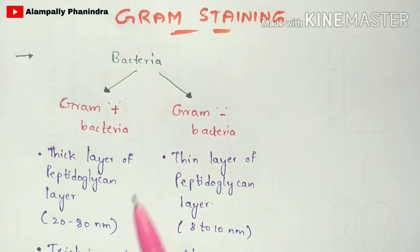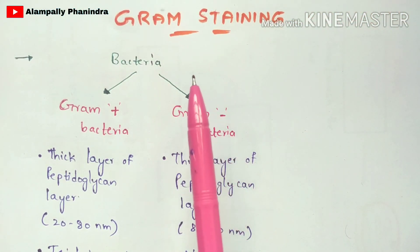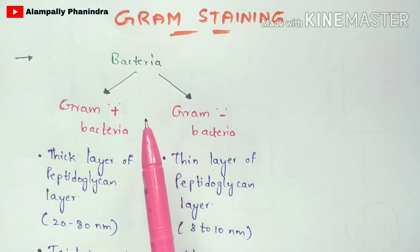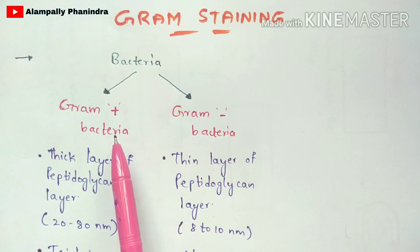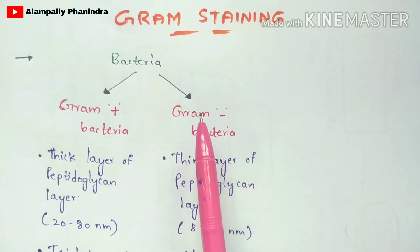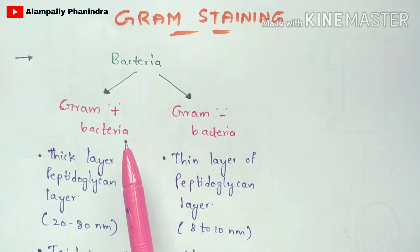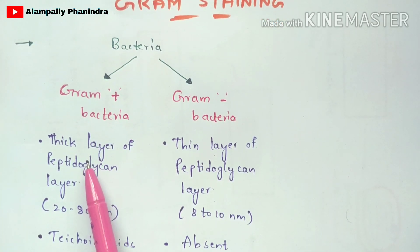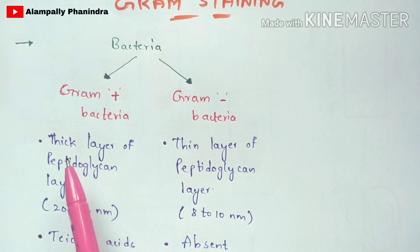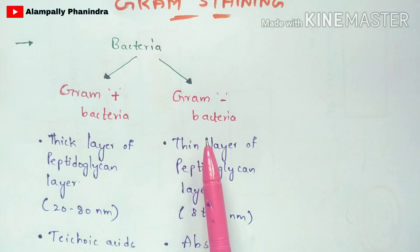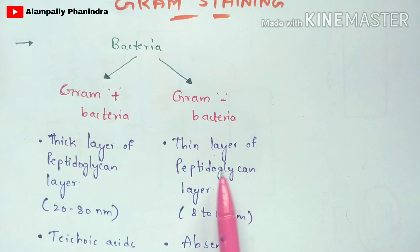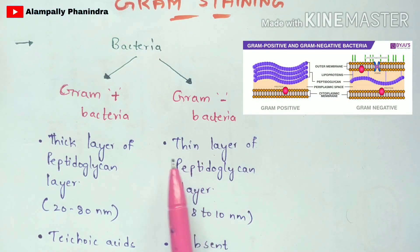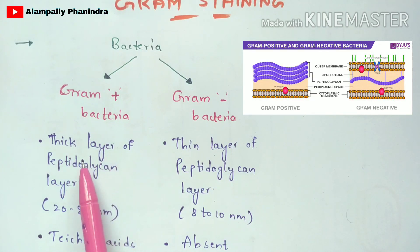In this video we are going to discuss gram staining in detail, including its procedure. There are two types of bacteria: gram positive bacteria and gram negative bacteria. In gram positive bacteria, a thick layer of peptidoglycan will be present in the cell wall, whereas in gram negative bacteria, a thin layer of peptidoglycan will be present. This is one of the major differences to remember.